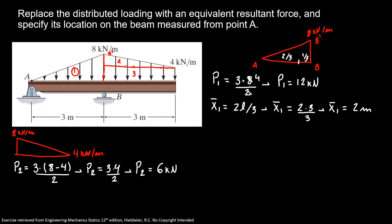Now to find our x̄₂, we know it is 1/3 measuring from the height. So x̄₂ is equal to 1/3 times L, which gives our x̄₂ equal to 1 meter measuring from B. I'm gonna note B here to remind you guys that it's measured from B.